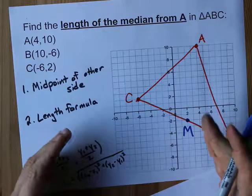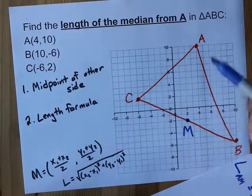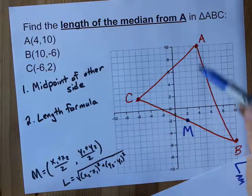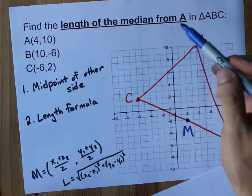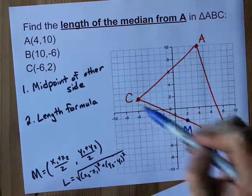Length of a median is super easy. You find the midpoint of the opposite side from the corner you're asked about. We were asked for A, so we needed the midpoint of BC.